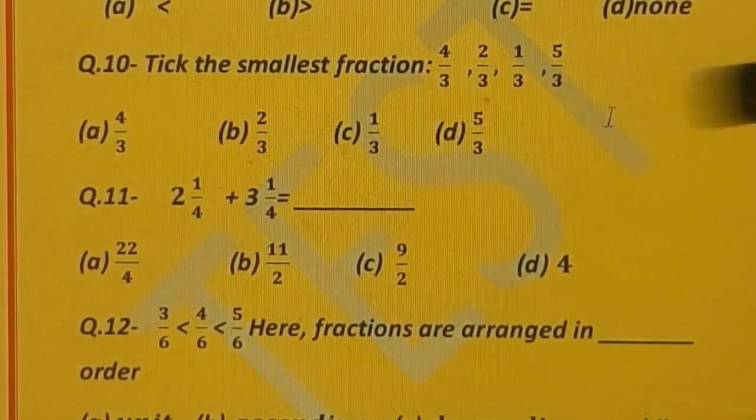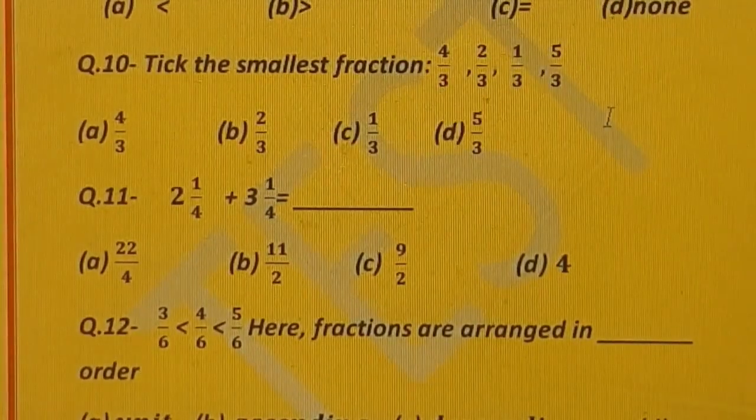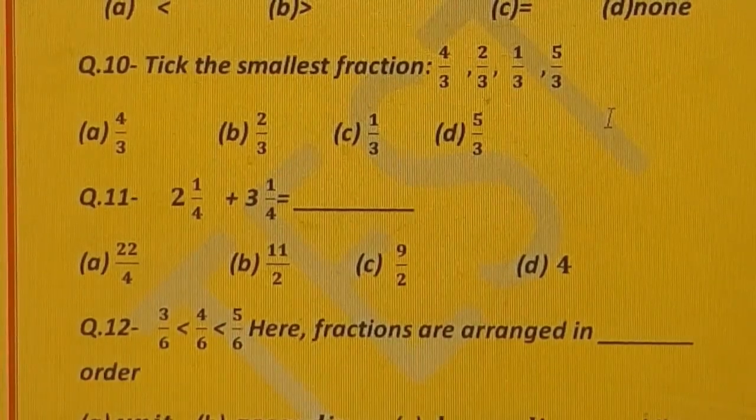Question number 11. 2 whole 1 upon 4 plus 3 whole 1 upon 4 is equal to dash. You have to tell the answer after solving this. You can solve orally because it is a very simple question. Options are: A) 22 upon 4, B) 11 upon 2, C) 9 upon 2, and D) 4.